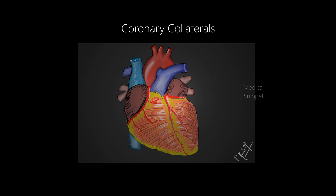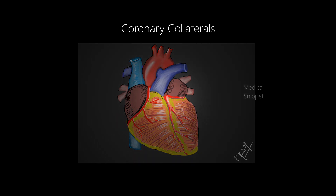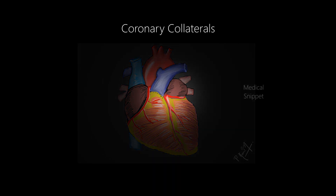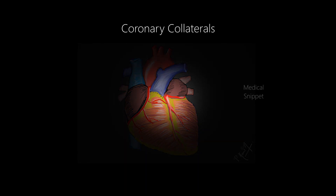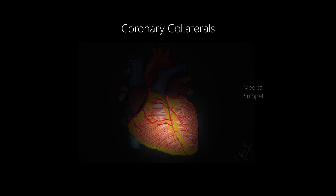Coronary collaterals are also called natural bypasses. These are anastomotic connections without an intervening capillary bed. They can be between portions of the same coronary artery or between different coronary arteries. For example, in this case there is collateral circulation between the right coronary artery to the left anterior descending artery.